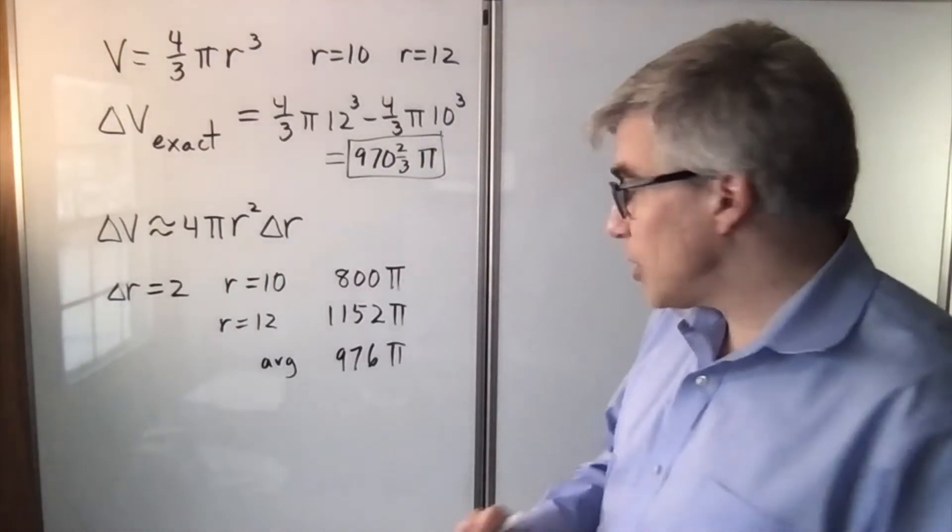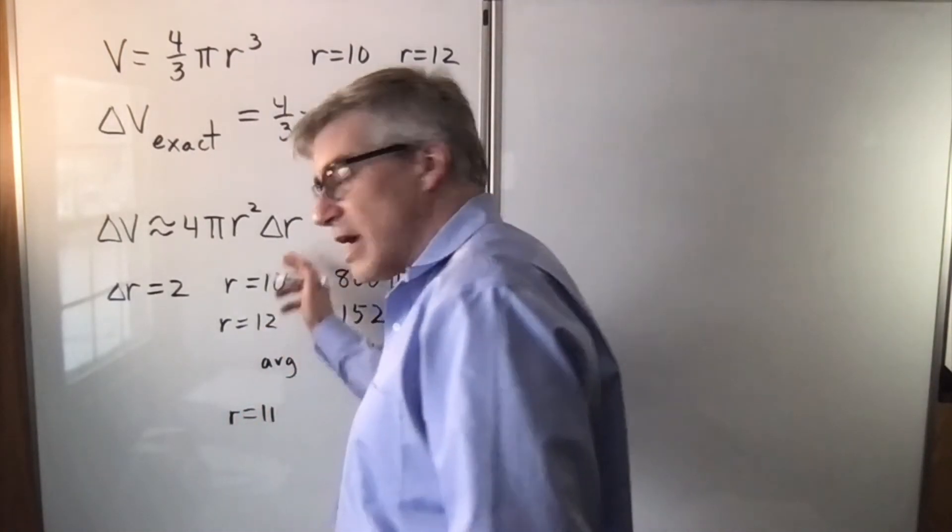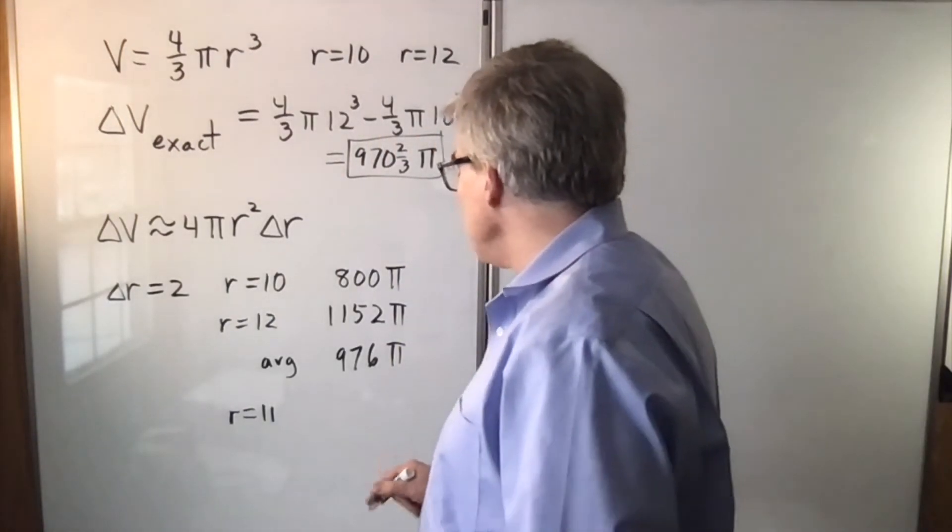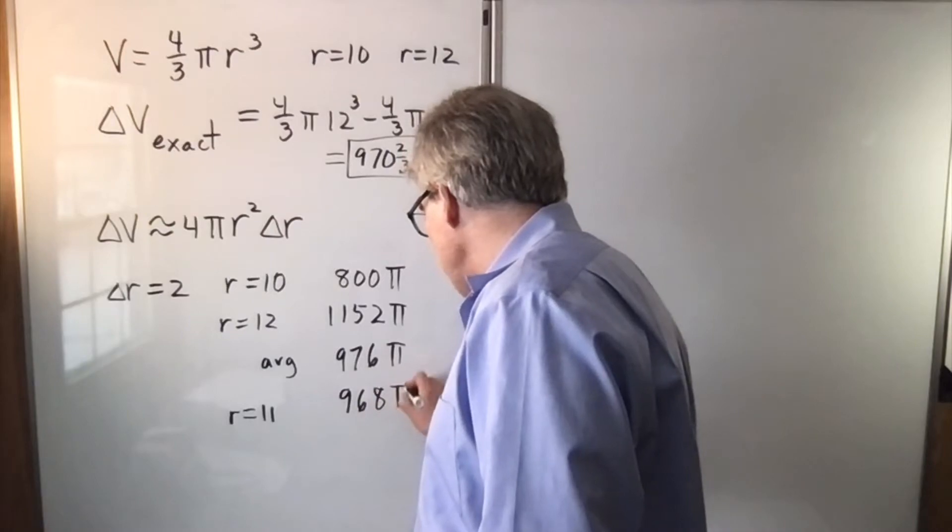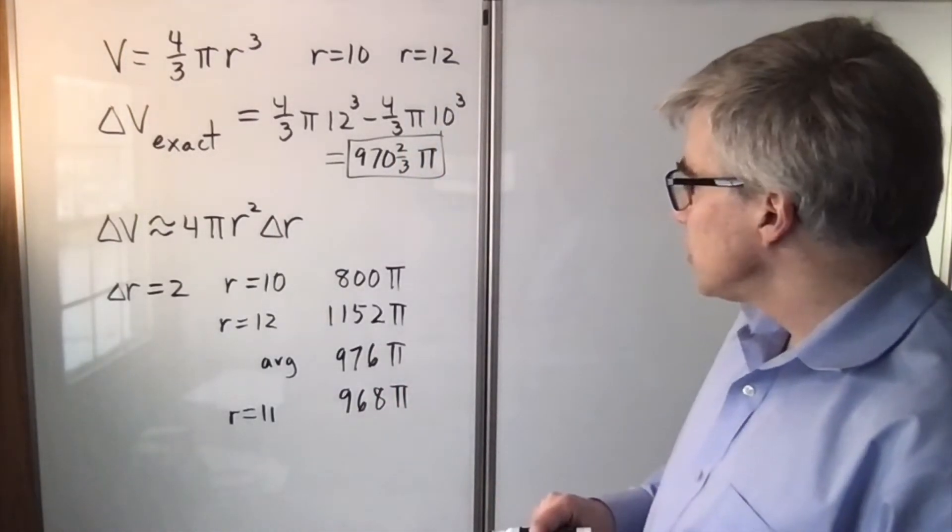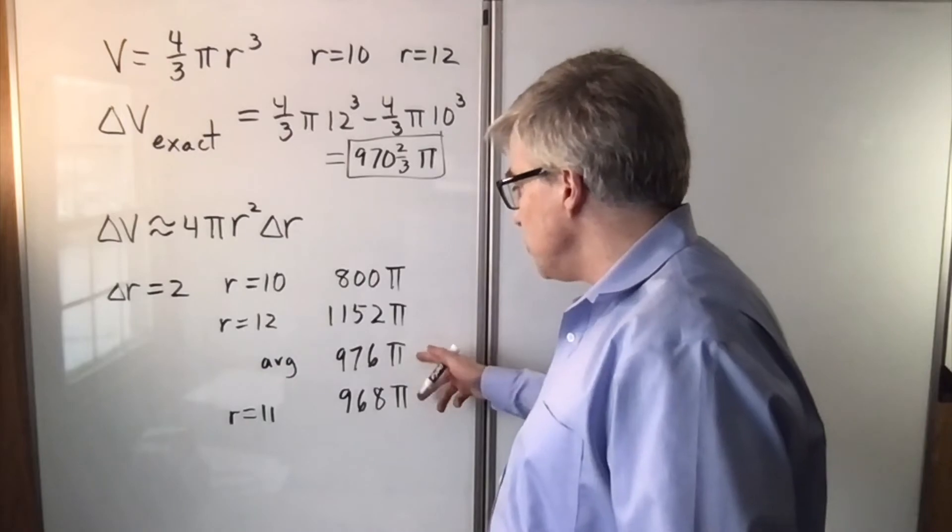There's another way we could approximate. We could use r equals 11. After all, that's halfway between 10 and 12. And if we use 11, we get 968 pi, which is again quite close. So the actual answer is in between here.